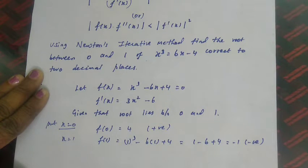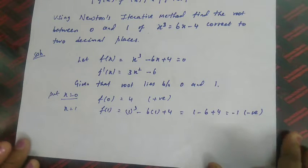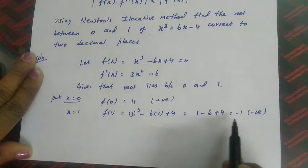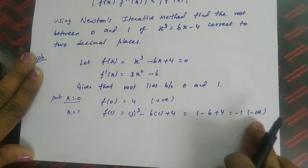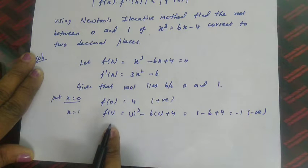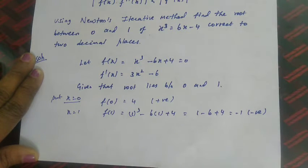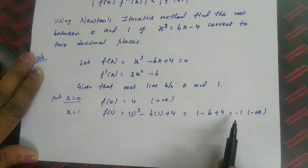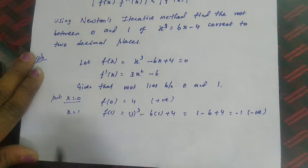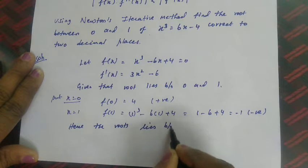Since f(0) and f(1) have opposite signs, the root lies between 0 and 1. If both had the same sign we would check f(2), and so on, stopping when we get a sign change. We continue substituting until we get opposite signs, then the root lies between those two points.